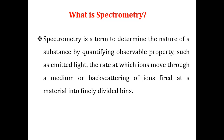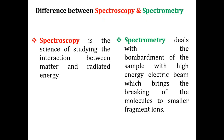Now the difference between spectroscopy and spectrometry. The first key point: spectroscopy is the science of studying the interaction between matter and radiated energy. Spectrometry, on the other hand, deals with the bombardment of a sample with a high-energy electrical beam, which breaks down the molecules into smaller fragment ions. Interaction between radiation and matter is spectroscopy; bombarding a sample with a high-energy electron beam until it breaks down into small particle fragments is spectrometry.